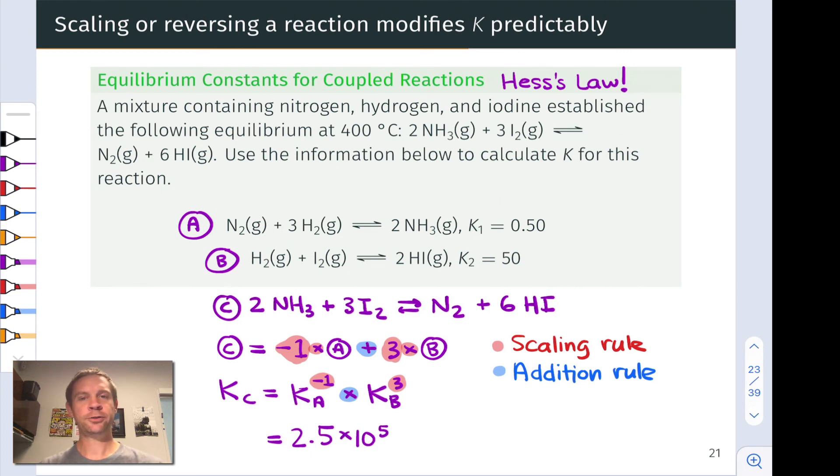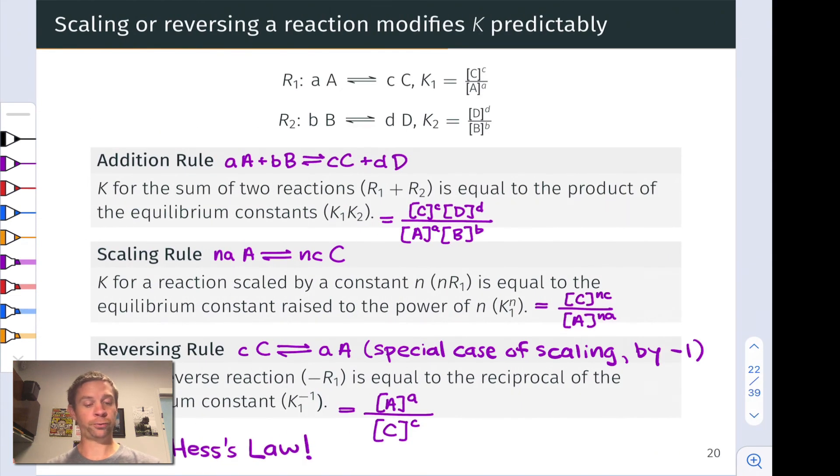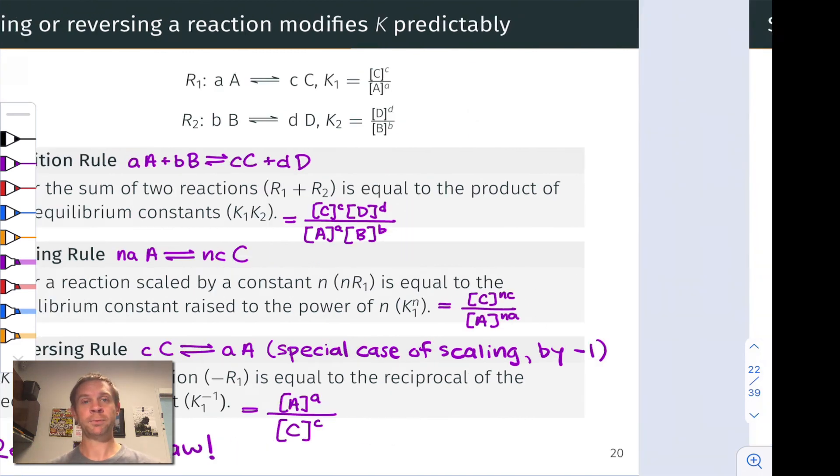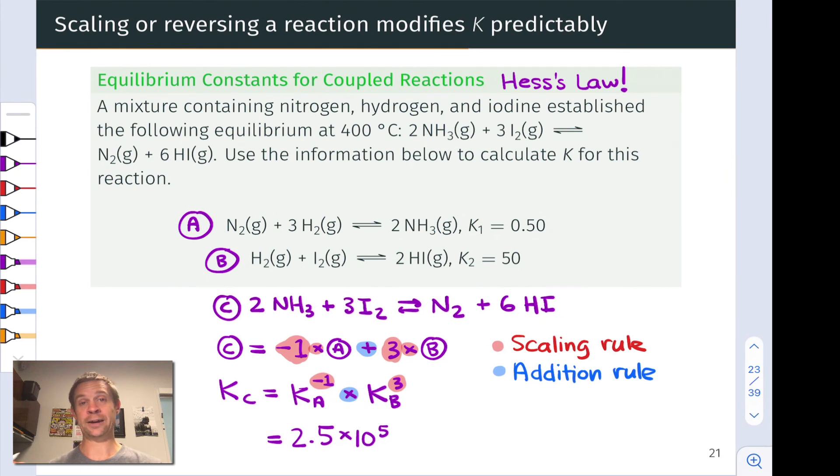So this problem demonstrates how we can apply these rules for modifying reactions and figuring out what the resulting K value is to determine the K value for a reaction that we've never run or maybe is very impractical or very difficult to run using knowledge of known equilibrium constants for typically simpler, more easily understood reactions.